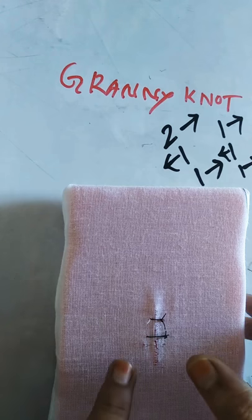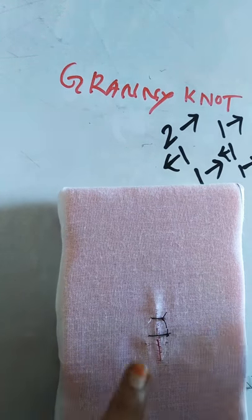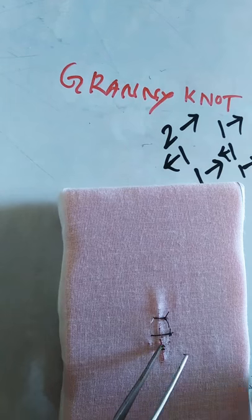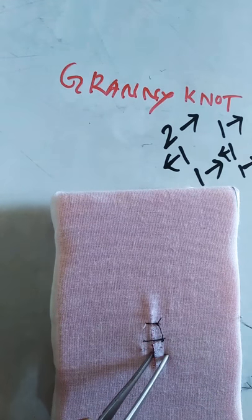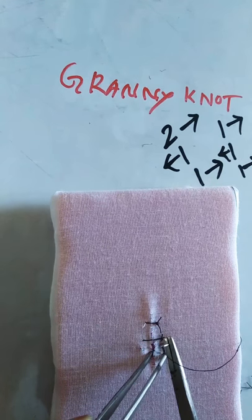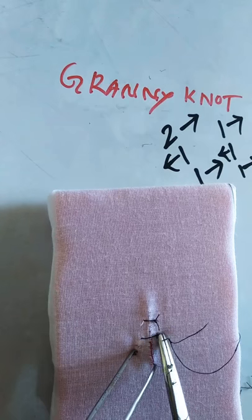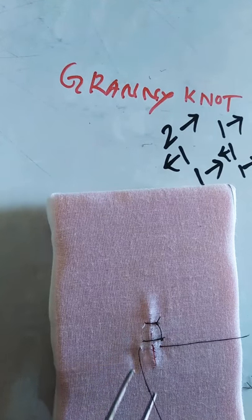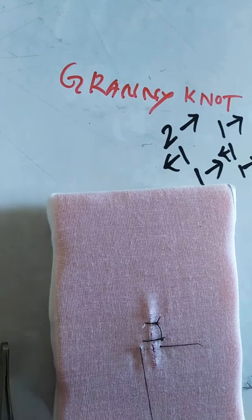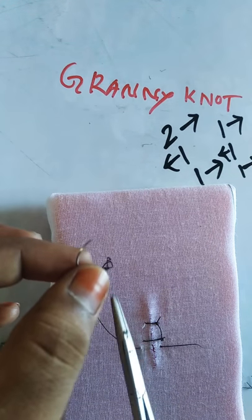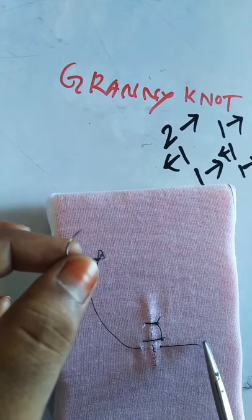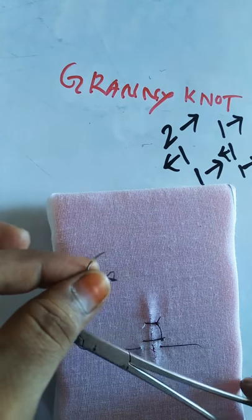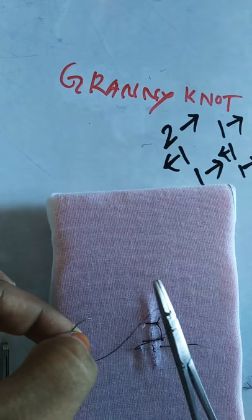Now we will see the granny knot. There is an incision site. I will hold one edge with the tissue holding forceps, pass the needle perpendicular to the tissues, and pull through the tissues. There is a long end and a short end. The first tie should be made in the clockwise direction with one throw.